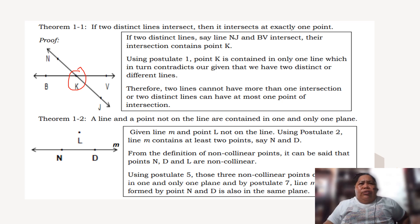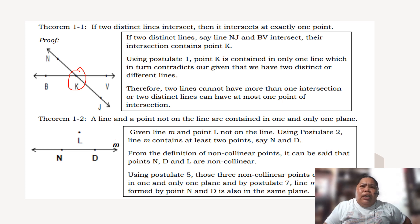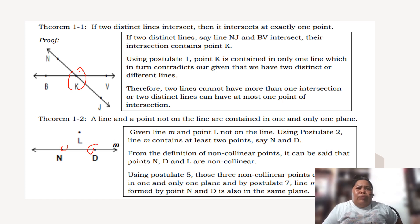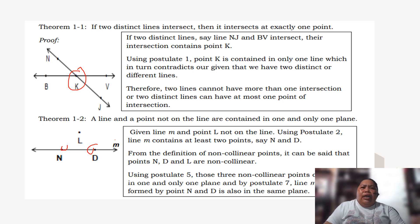A line and a point not on the line are contained in exactly one plane. Given line M and point L not on it, using Postulate 2, line M contains at least two points, say N and D. From the definition of non-collinear points, N, D, and L are non-collinear. Using Postulate 5, these three non-collinear points lie in exactly one plane, and by Postulate 7, line M with points N and D is also contained in that same plane.